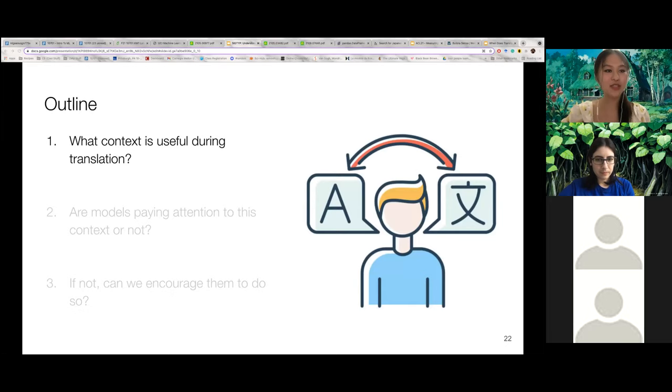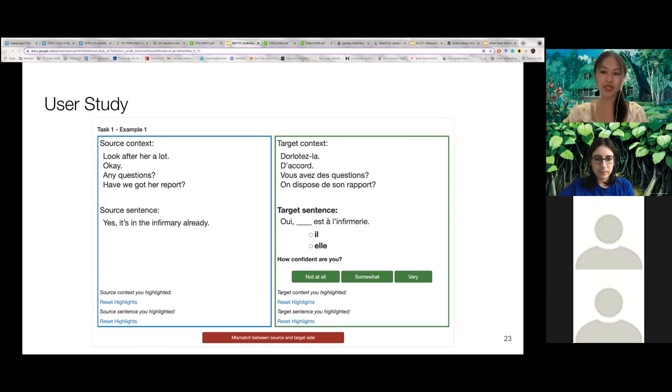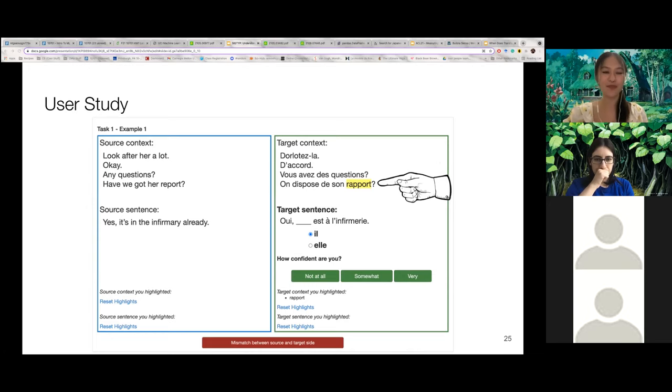So for the first question, we conducted a user study to collect the supporting context that human translators use. And to do so, we asked 20 professional English to French translators to select the correct translation when given two possible choices, and then highlight all the supporting context words that they use to achieve their answer. And we performed the study for two tasks.